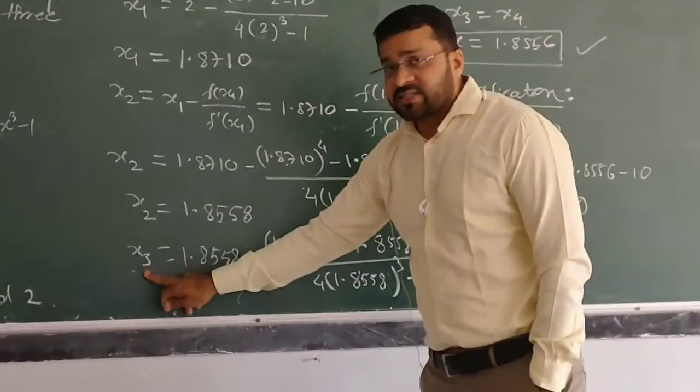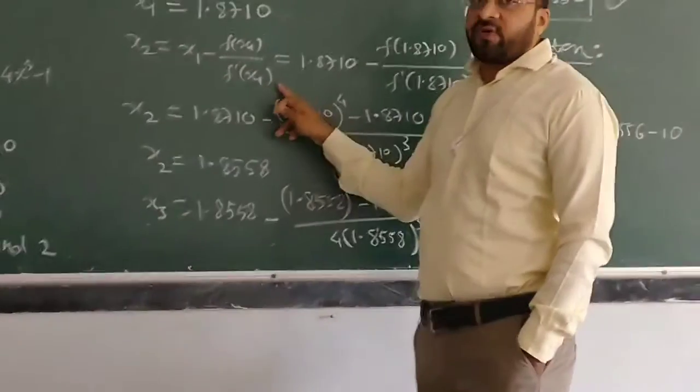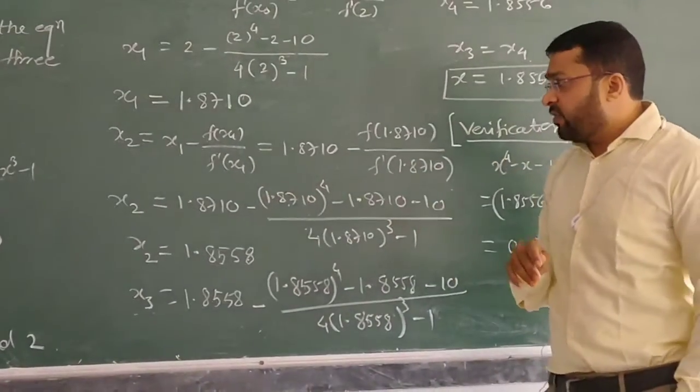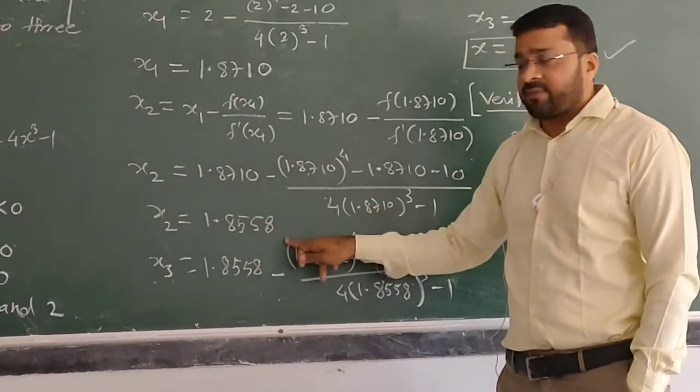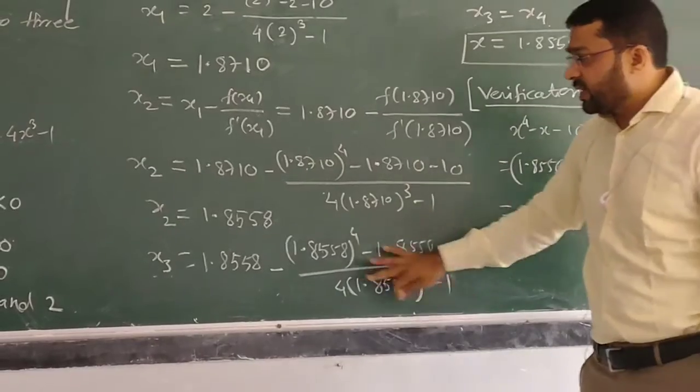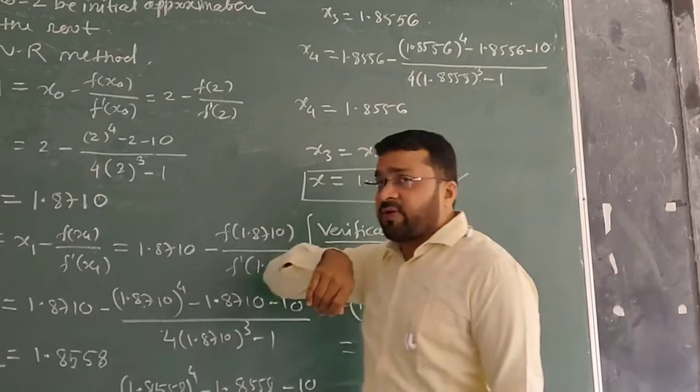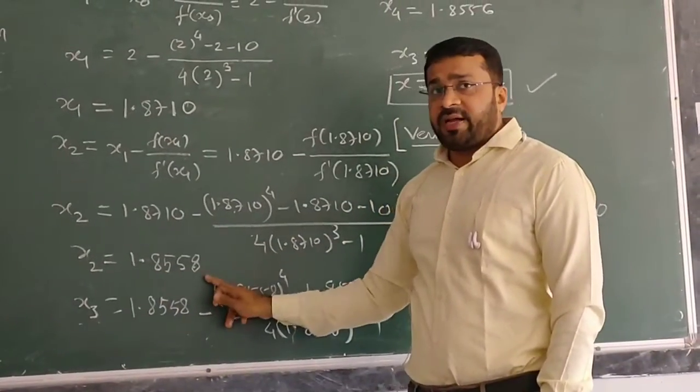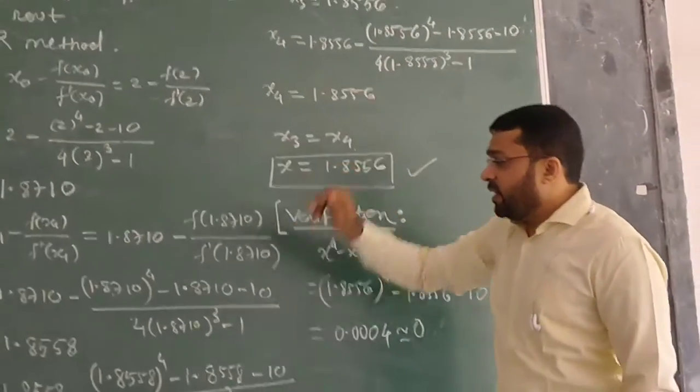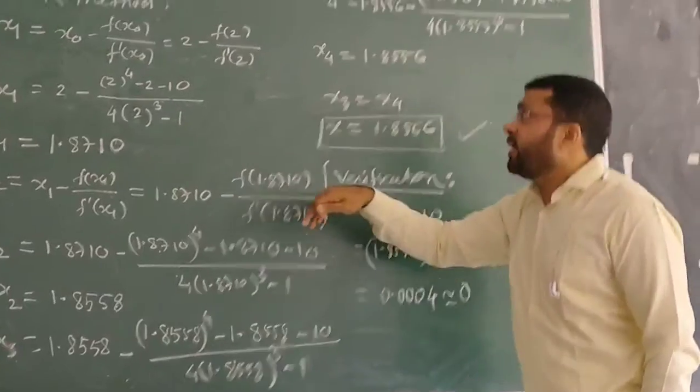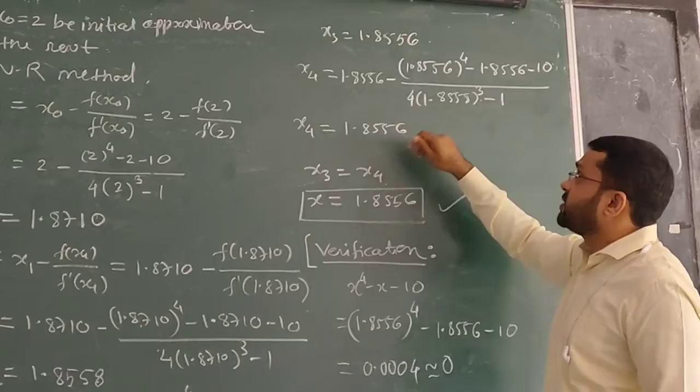So we calculate x₃: x₂ minus f(x₂) over f'(x₂). We replace 1.8710 by the new quantity 1.8558. I get the value of x₃ = 1.8556. x₃ is 1.8556, x₂ is 1.8558. Again there is a difference of 0.0002. So x₄ will be calculated. I replace 1.8558 by 1.8556, and I get x₄ = 1.8556, the same quantity.